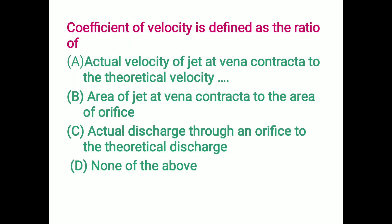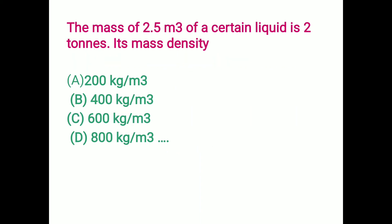The coefficient of velocity is defined as the ratio of the actual velocity of the jet at the vena contracta to the theoretical velocity. Option A is the correct answer.